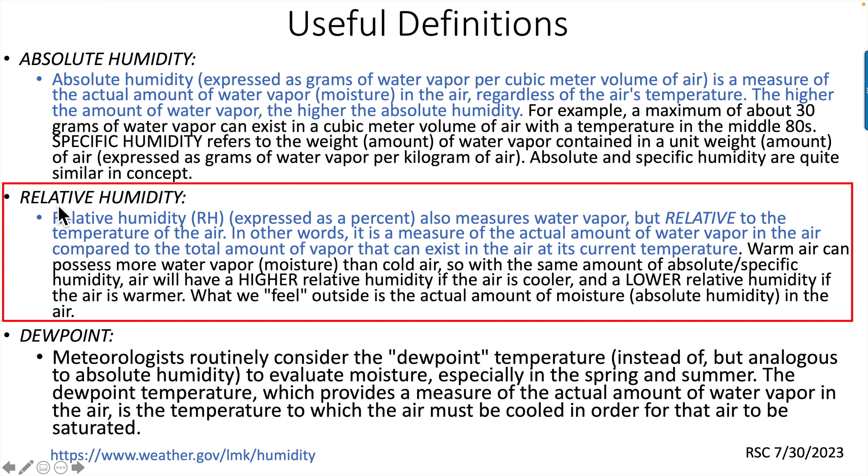Relative humidity, which is what we're interested in here, is also called RH and is expressed as a percent. It also measures water vapor but relative to the temperature of the air. In other words, it is a measure of the actual amount of water vapor in the air compared to the total amount of vapor that can exist in the air at its current temperature. Warm air can possess more water vapor or moisture than cold air. So this is what we are particularly interested in.